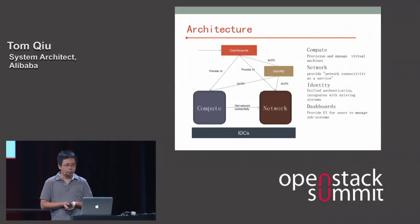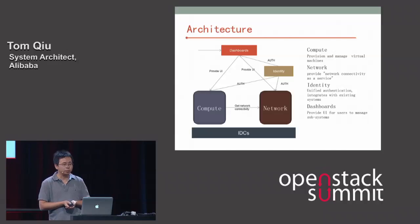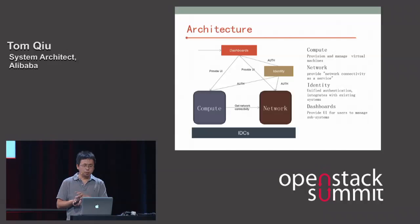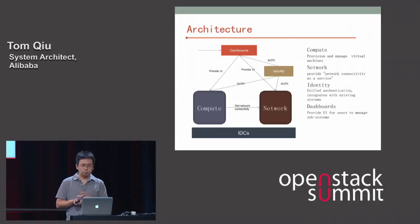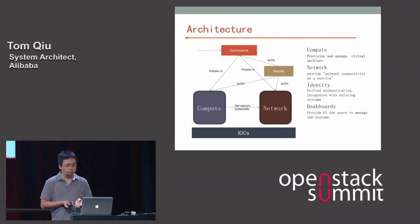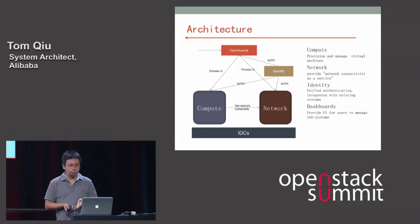Our architecture includes compute and network, much like OpenStack. The compute subsystem provides virtual machines as a service. The network subsystem provides network connectivity as a service. The compute subsystem gets network connectivity from the network subsystem, and the identity subsystem provides unified authentication — all other components connect to it to obtain authorization. Engineers use dashboards to operate the system.